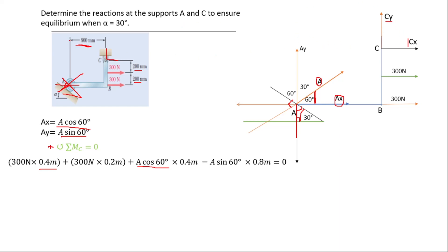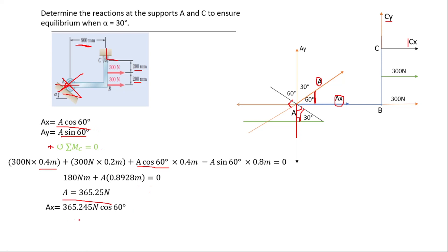When you work it out correctly, you get 180 newton-meters plus A times 0.8928 meters equals zero. Solving, we get A = 365.25 newtons. Now, A is not the reaction itself — the reactions are Ax and Ay. So we substitute: Ax = A cos 60° = 365.25 × cos 60°, which gives Ax = 182.623 newtons. That is the reaction Ax.